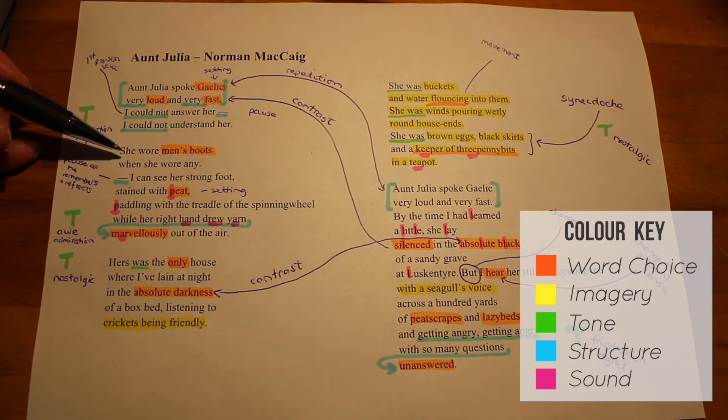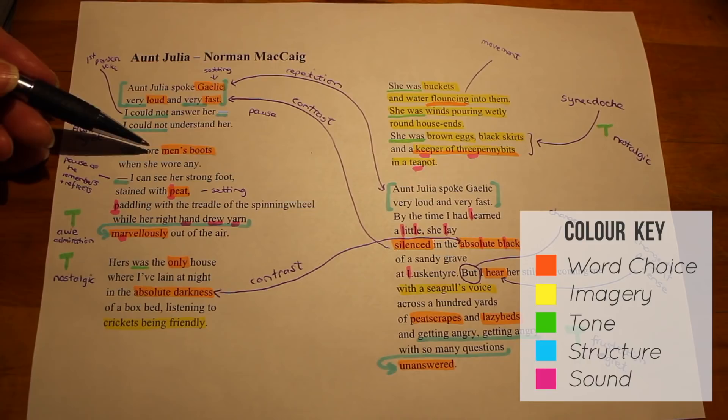Crofting is the traditional way of farming, where you have a small house and a small amount of land, and you make your own living there by growing your own food and having your own sheep and cattle. She would probably have had to go outside and do all these outside chores, and that's why she required boots.